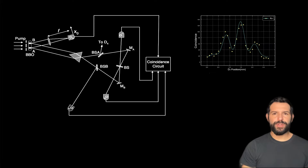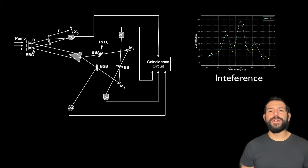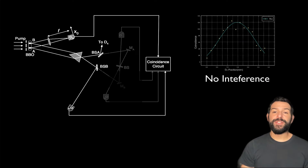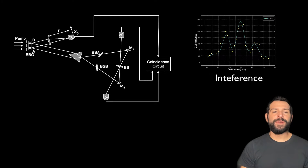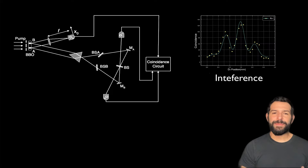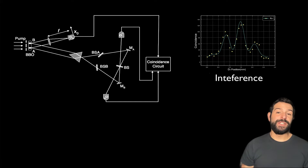According to the authors, the ingenuity of this particular setup lies in the ability to manipulate the interference pattern caused by the wave-like nature of the photon, making it vanish or reappear even after the photon has hit the screen. Unfortunately, it is this depiction what has led many to mistakenly infer that these results imply some sort of retrocausality or backwards-in-time communication, but as we will see in this video, this couldn't be further from the truth.